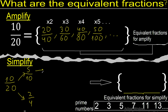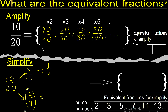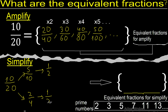5 and 10 can be divided by 5: 5 divided by 5 is 1, 10 divided by 5 is 2. Divided by 2: 2 divided by 2 is 1, 4 divided by 2 is 2.